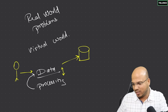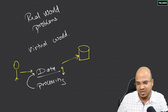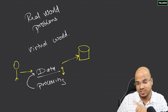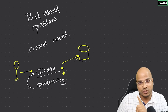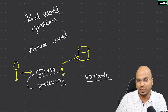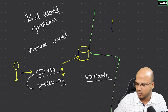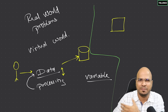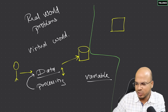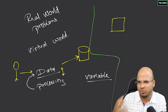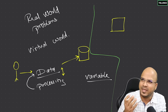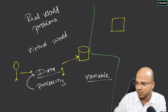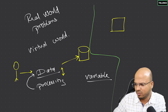The database is for permanent storage, but during processing you need somewhere to store data temporarily. That somewhere is a variable. Think of a variable as a box — inside the box you store your data. The data can be numeric, text, an image, or whatever you want to store.